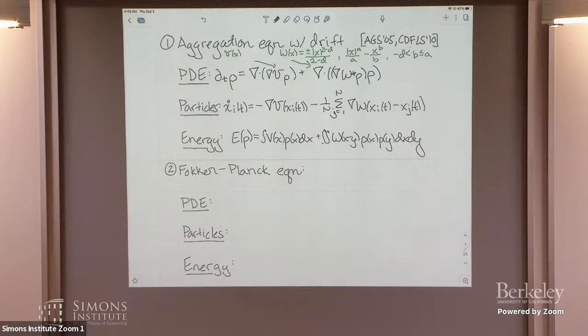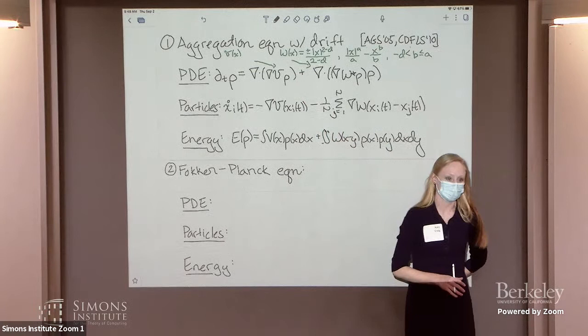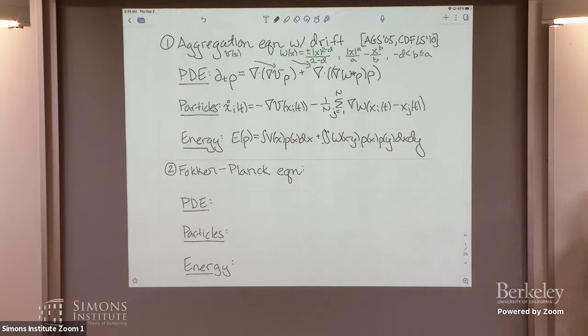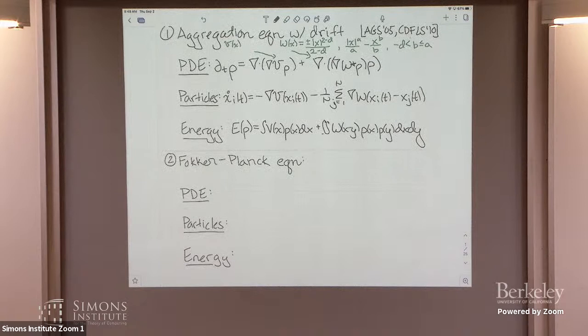A good point from the audience: in the interaction potential, W depends on both x and y only through their difference x minus y, which makes the theory much easier than when W depends on x and y individually. This is a key structural assumption that simplifies analysis considerably.